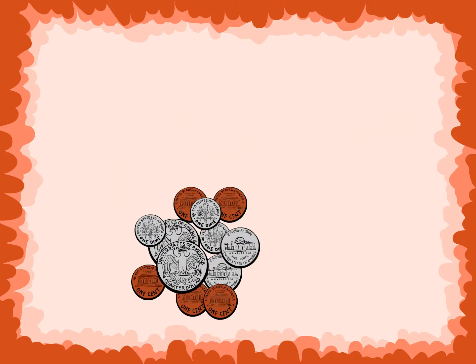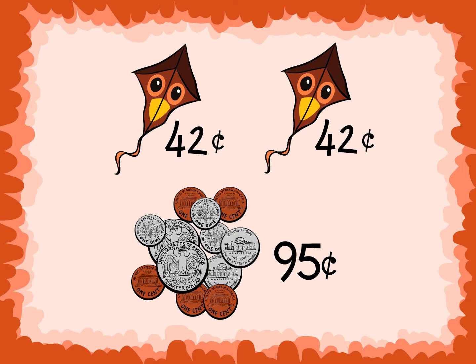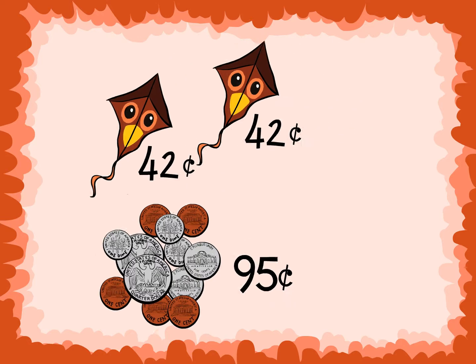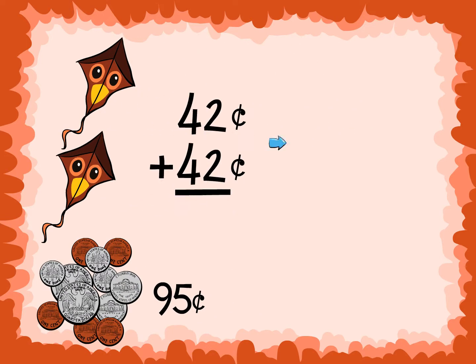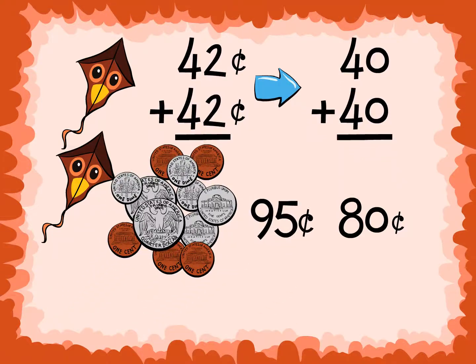Jackie has 95 cents. She wants to buy 2 kites. Does she have enough money to buy 2 kites? 42 rounds to 40. 40 plus 40 is 80. Our estimate is 80 cents. Jackie has 95 cents; she needs about 80 cents. Jackie does have enough money to buy 2 kites.